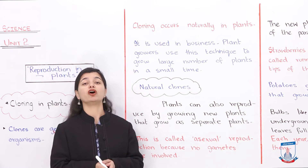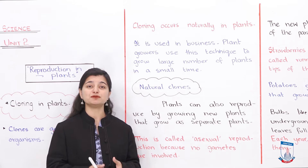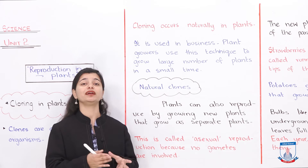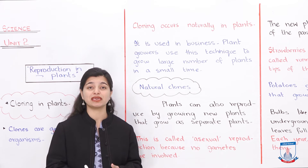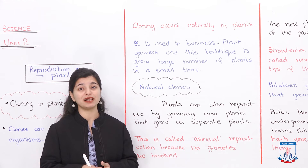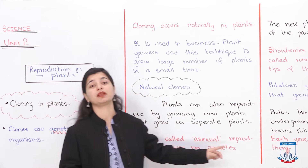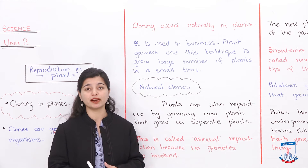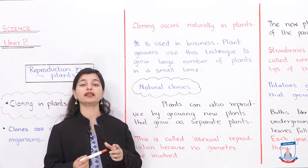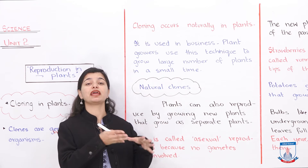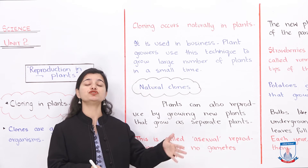First we talked about natural cloning, and then we said that businesses artificially use it in labs to create more plants. Now we focus on natural clones. We will see examples of plants that use this phenomenon naturally, which later led people to start using it artificially. Plants can reproduce by growing new plants from their own parts — for example, a stem grows to the side, develops new roots, and eventually becomes a new separate plant.